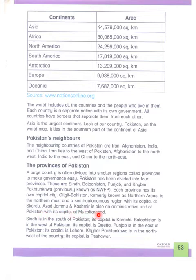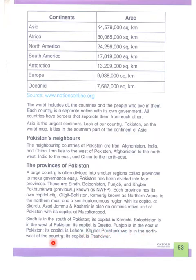Azad Jammu and Kashmir is also an administrative unit of Pakistan with its capital at Muzaffarabad. Sindh is in the south of Pakistan and its capital is Karachi. Balochistan is in the west of Pakistan and its capital is Quetta. Punjab is in the east of Pakistan and its capital is Lahore. Khyber Pakhtunkhwa is in the northwest of the country and its capital is Peshawar.